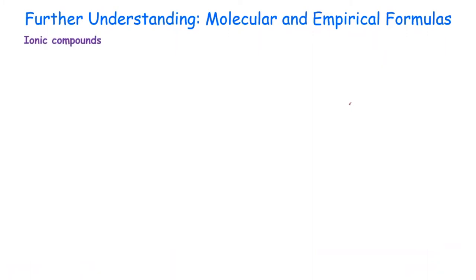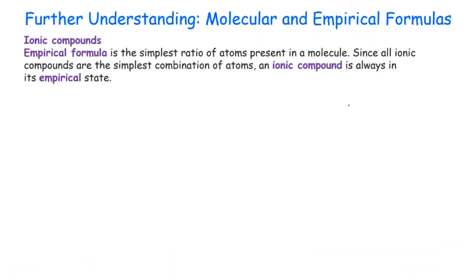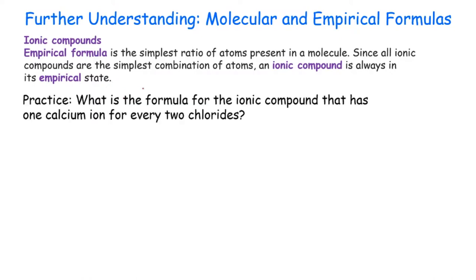Let's keep working on molecular and empirical formulas. Ionic compounds, as I already mentioned, are always already in the empirical state — they are already the simplest form.